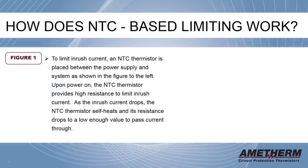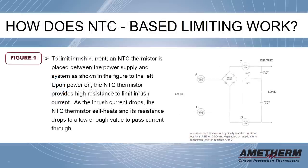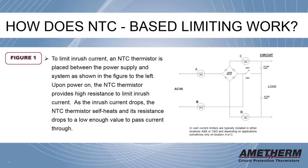How does NTC-based limiting work? To limit inrush current, an NTC thermistor is placed between the power supply and system as shown in the figure to the left. Upon power on, the NTC thermistor provides high resistance to limit inrush current. As the inrush current drops, the NTC thermistor self-heats, and its resistance drops to a low enough value to pass current through.